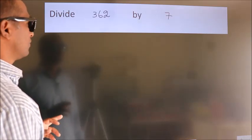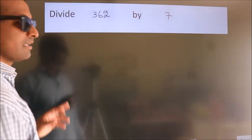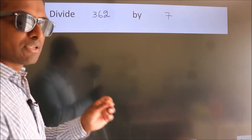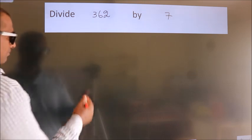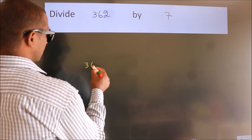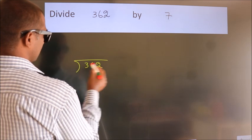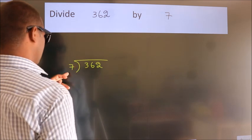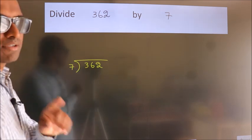Divide 362 by 7. To do this division we should frame it in this way: 362 here, 7 here. This is your step 1.